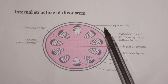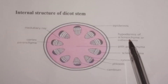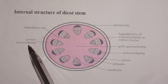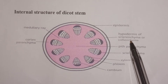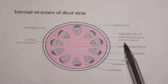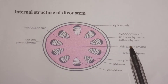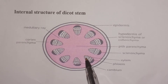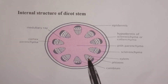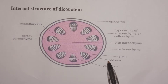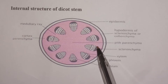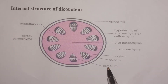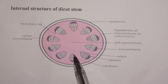Here we have the internal structure of the dicot stem. The outer structure is called the epidermis. The region next to the epidermis is called the cortex, which contains three tissues: parenchyma, sclerenchyma, and collenchyma. From there we have the vascular bundle, made up of xylem and phloem. The xylem is positioned towards the inside of the pith, and the phloem towards the outside. Next to the outer side of the phloem is the sclerenchyma. The central region is the pith, and between the xylem and phloem is the cambium.